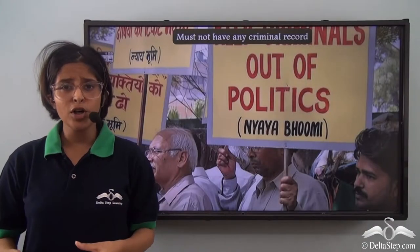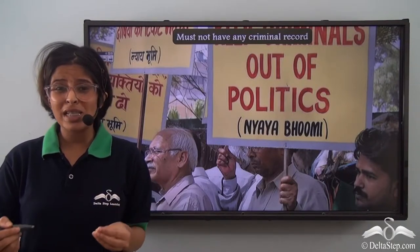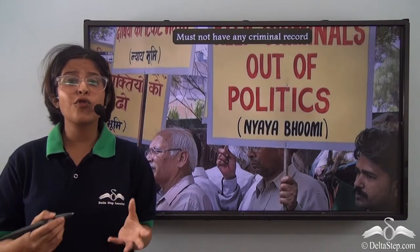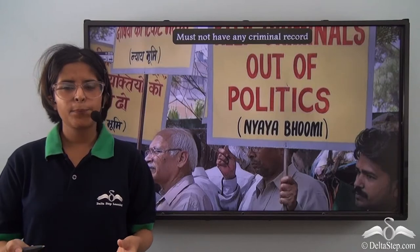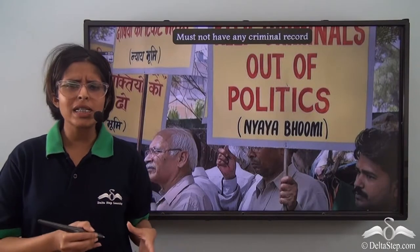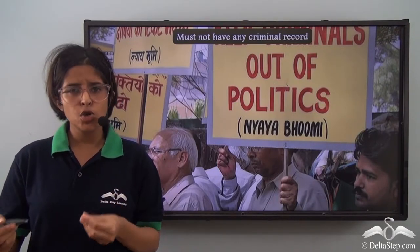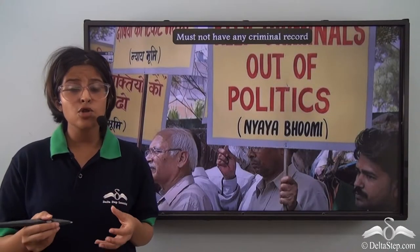A Lok Sabha member on average represents 25 lakh people. A criminal should not represent 25 lakh people as it would lessen the dignity and respect of the parliament. However, the makers of the constitution were not against giving second chances — your past should not influence your present. So if a person was convicted of a crime and imprisoned for 2 years or less, they can still contest for the post of a Lok Sabha member. About 50% of people elected through the 2019 Lok Sabha elections have pending criminal records.